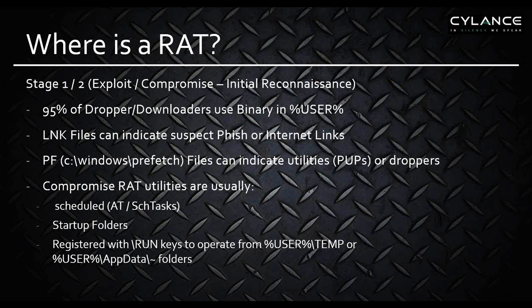Compromised RAT utilities are usually scheduled for persistence under Windows scheduled tasks or AT jobs. AT jobs — this method has been going back since at least 2002 and is still the number one preferred method used automatically by droppers to instantiate services as a system privilege, and largely used by manual hacking techniques to gain a privilege exploit on a local Windows station.